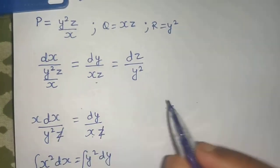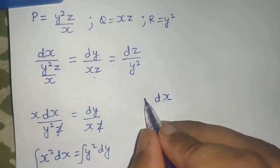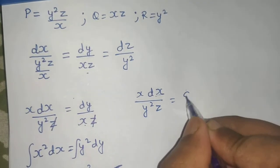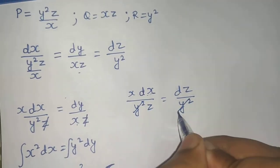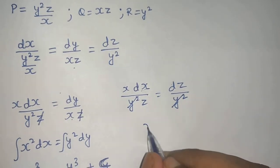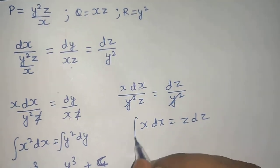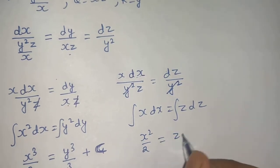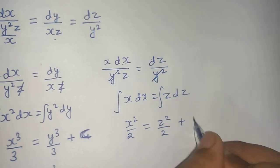If I equate first and third, I will get dx, this x will again go up, divided by y square z equals to dz divided by y square. Now y square is getting cancelled. I have dx with x and x dx equal to z dz. If I integrate both sides, integration of x is x square by 2, that of z is z square by 2 plus constant a.